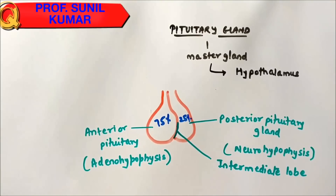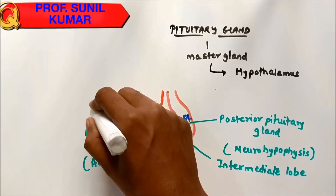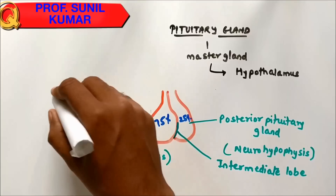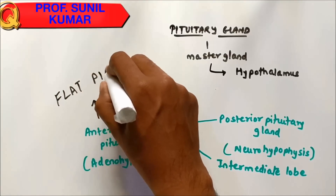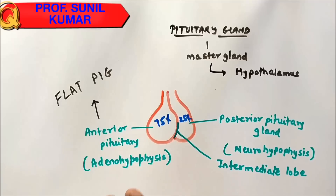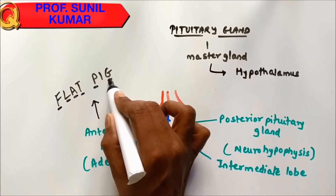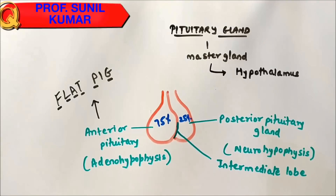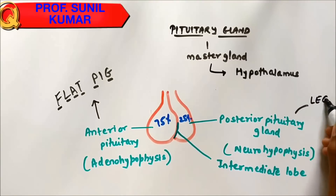The anterior pituitary is 75 percent of the total pituitary gland and the posterior pituitary is 25 percent. To remember the hormones of the anterior pituitary gland, we use the shortcut FLATPIG — F, L, A, T, P, I, G. I is the intermediate lobe. For the posterior pituitary gland, we use the shortcut LEG.